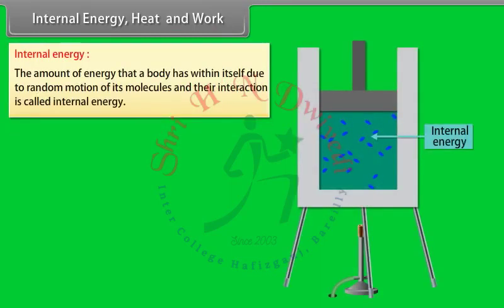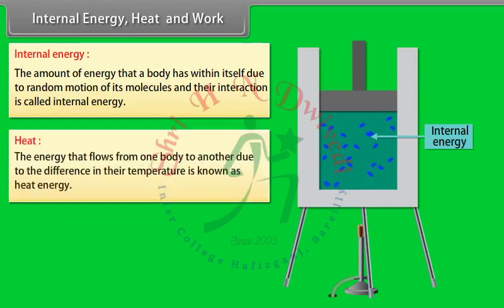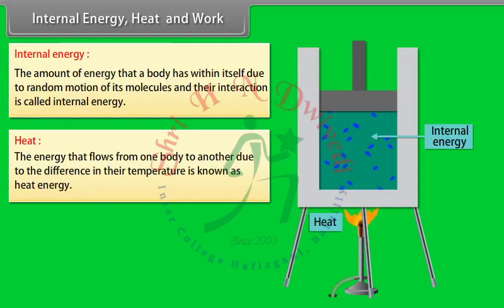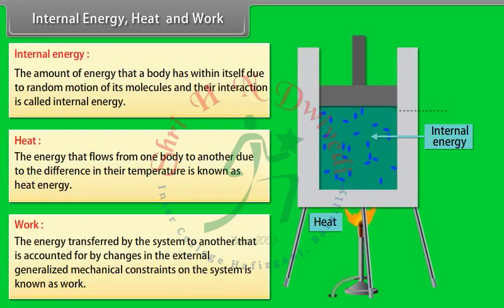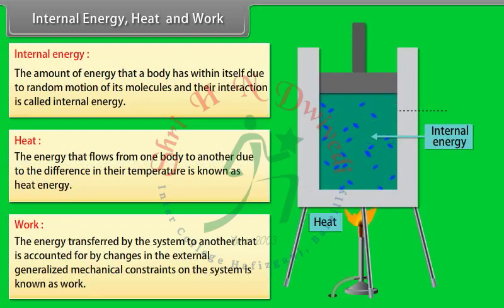The amount of energy that a body has within itself due to random motion of its molecules and their interaction is called internal energy. The energy that flows from one body to another due to a difference in their temperature is known as heat energy. The energy transferred by the system accounted for by changes in external generalized mechanical constraints on the system is known as work.